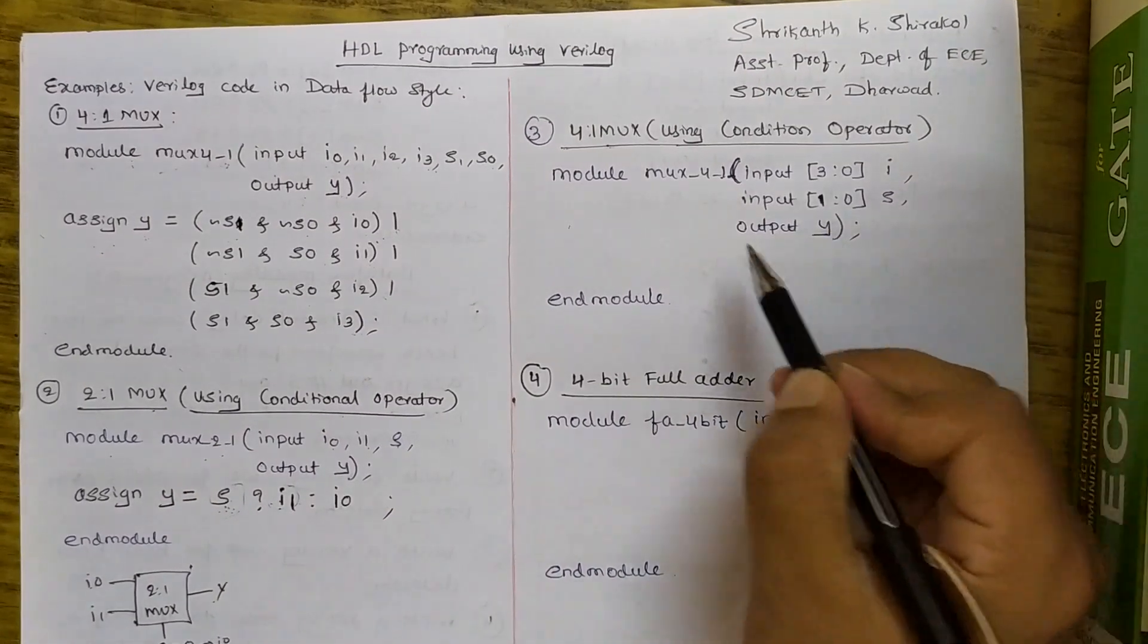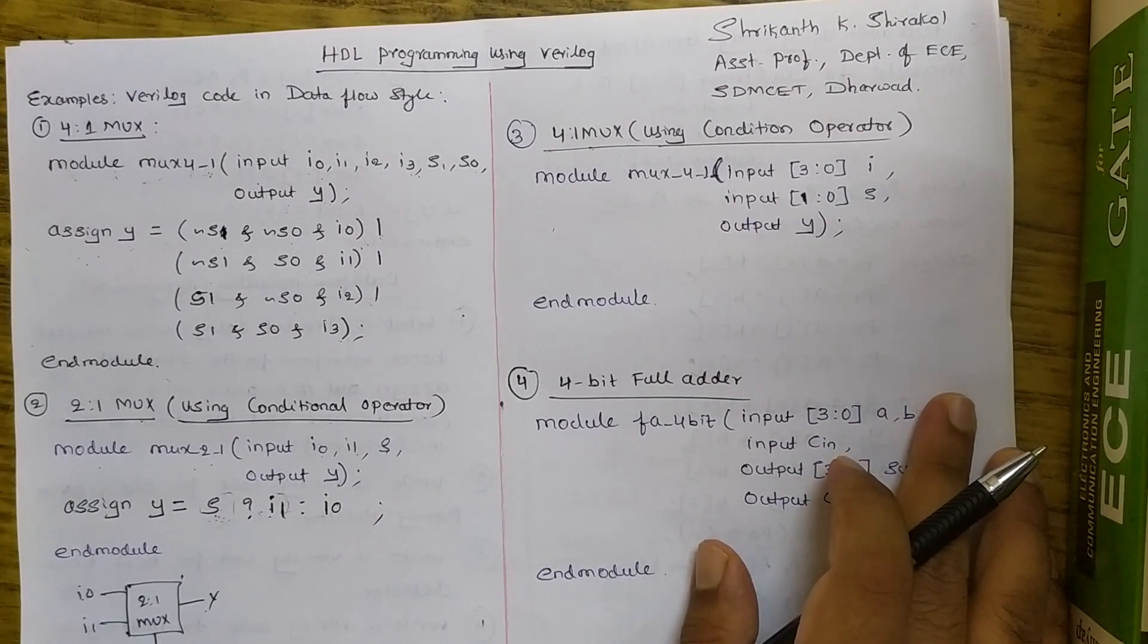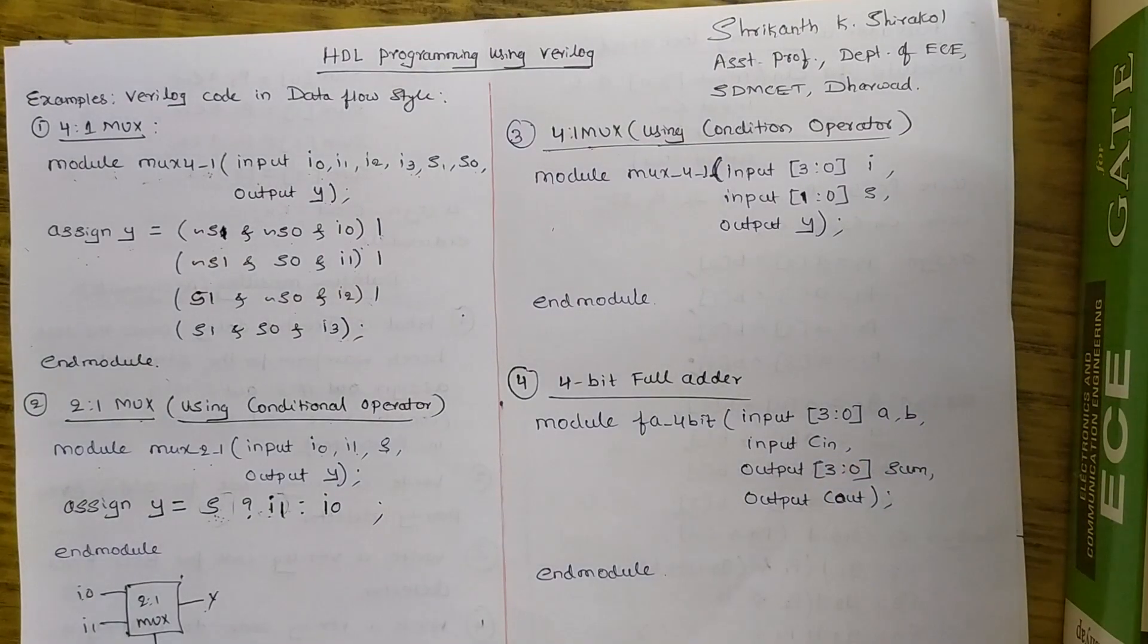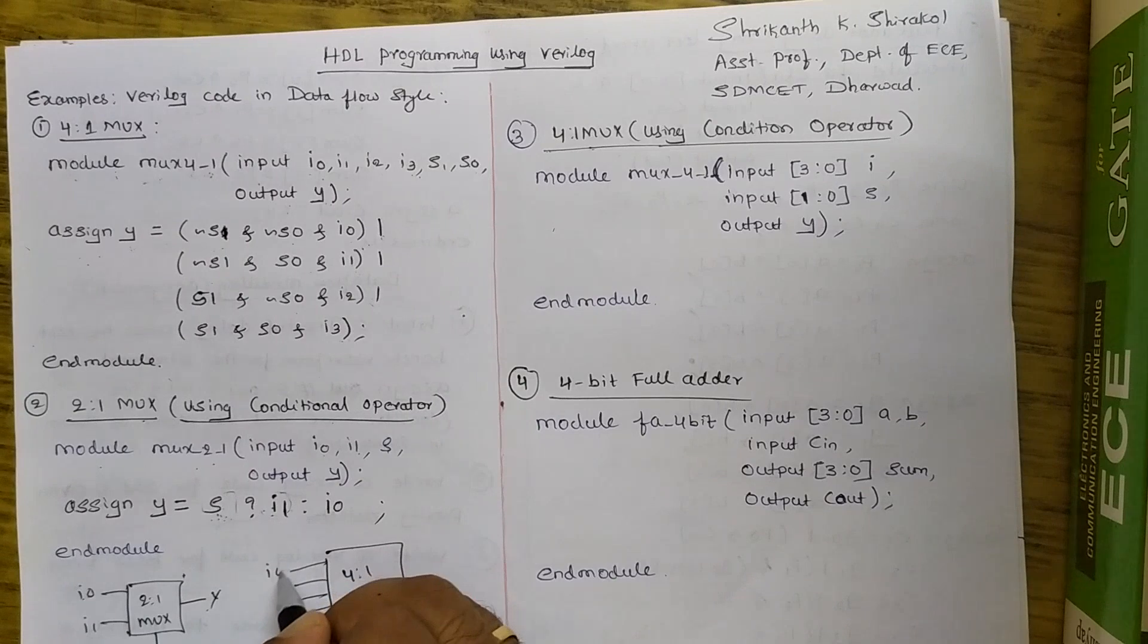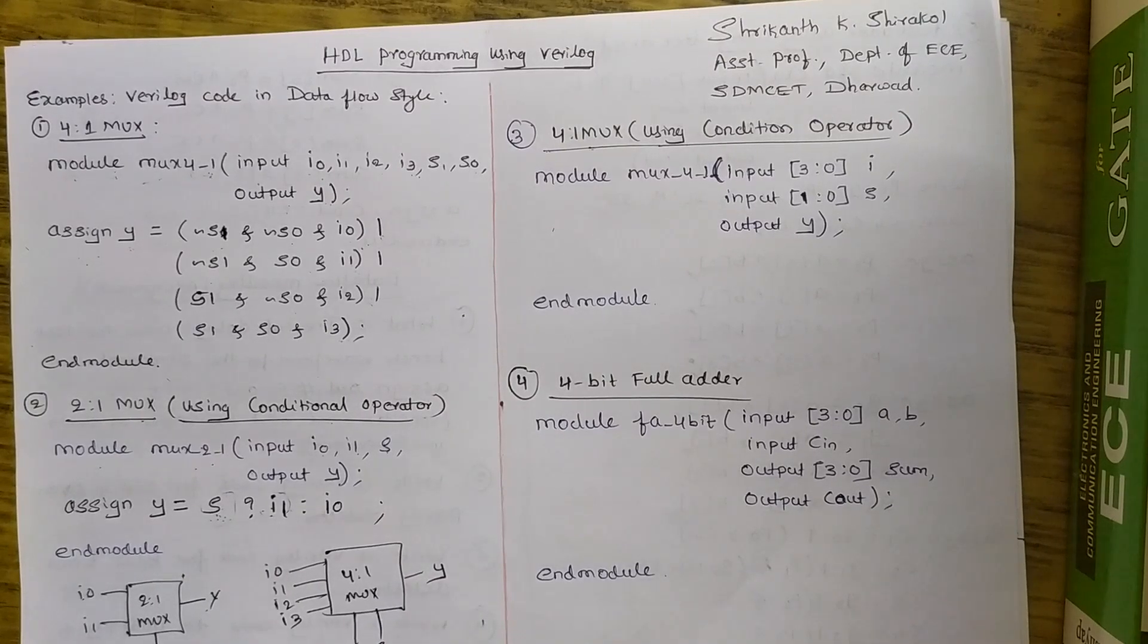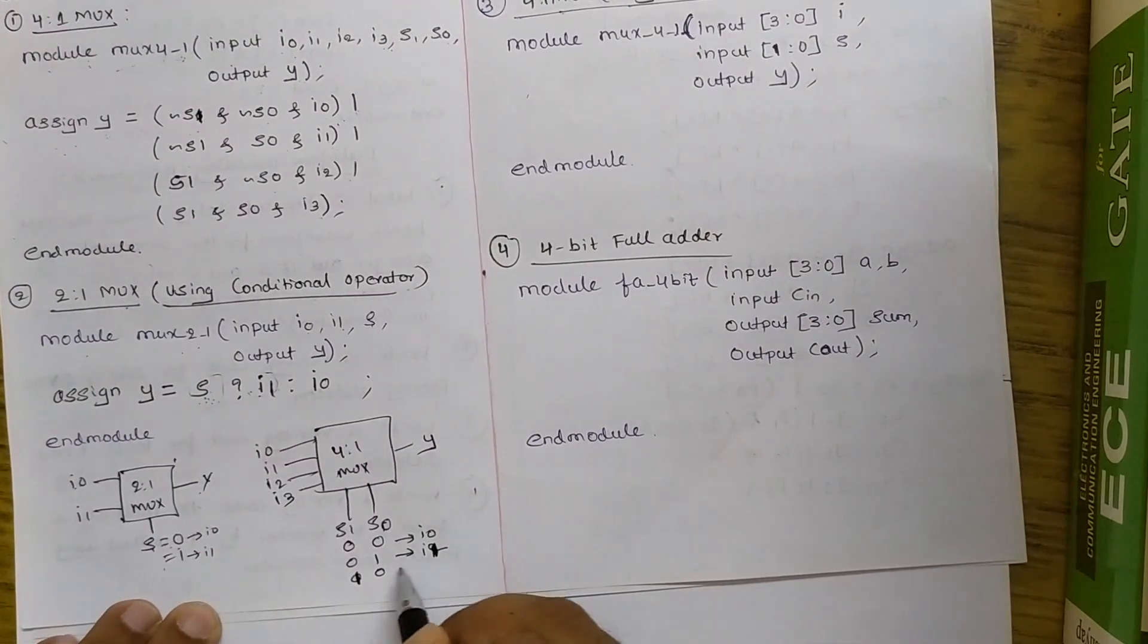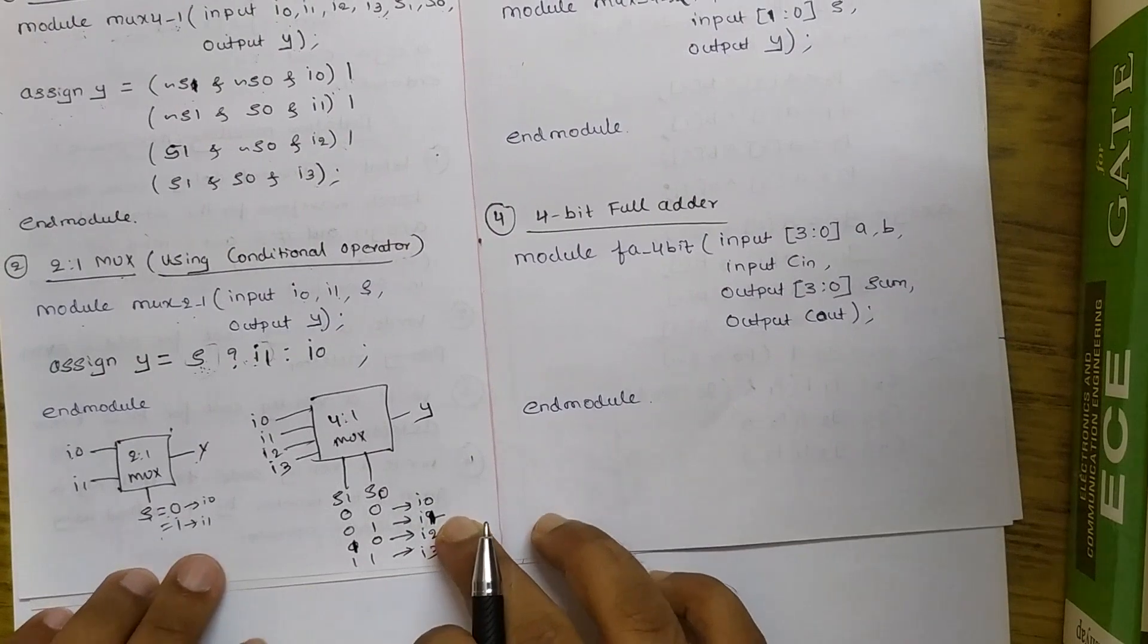Now in the same way, let us try 4-to-1 MUX using conditional operator. Of course, we need to check two-bit condition here. Hence, we need to use nested conditional operator. So nested conditional operator example we had earlier seen. Now we will apply it for 4-to-1 MUX. So let me draw 4-to-1 MUX block diagram here. I'll be having four inputs, two select lines and one output. So when S1 and S0 are 0,0, Y should be allotted with I0. When it is 0,1, Y should be allotted with I1. When it is 1,0, Y should be allotted with I2. When it is 1,1, Y should be allotted with I3. So this we will follow while writing the code here.